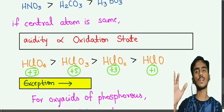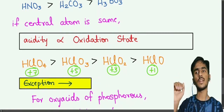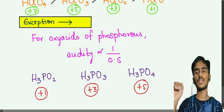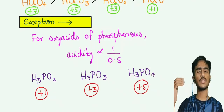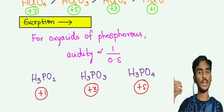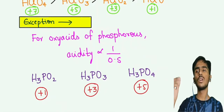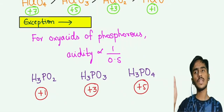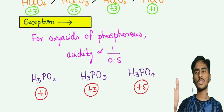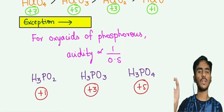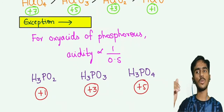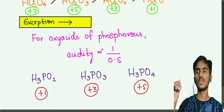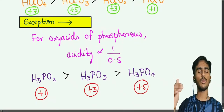When the central atoms are the same, acidity increases with oxidation state. However, there is an exception: the oxy acids of phosphorus. For phosphorus oxy acids, acidity is inversely proportional to oxidation state. Therefore, H3PO2 is more acidic and H3PO4 is less acidic.